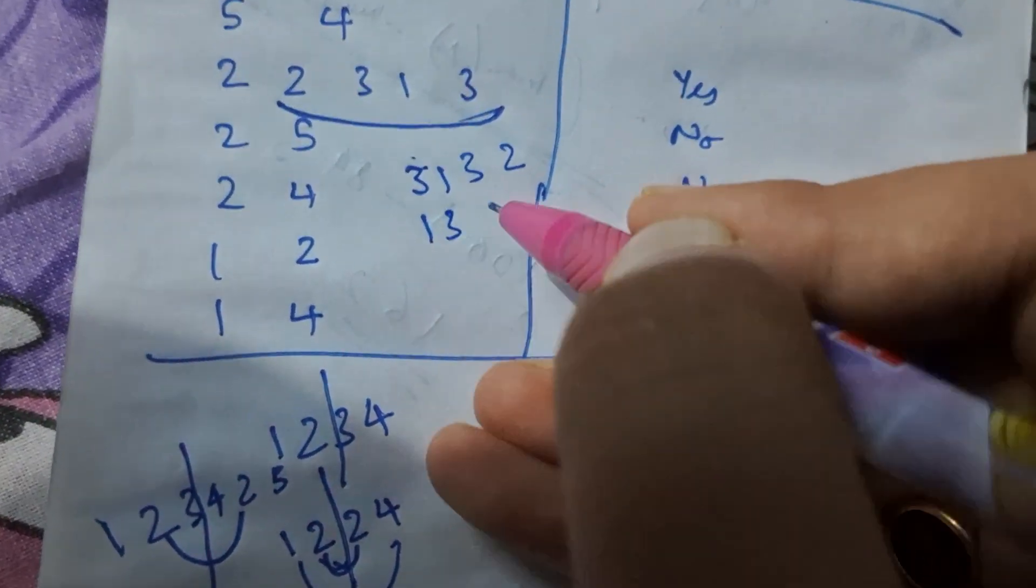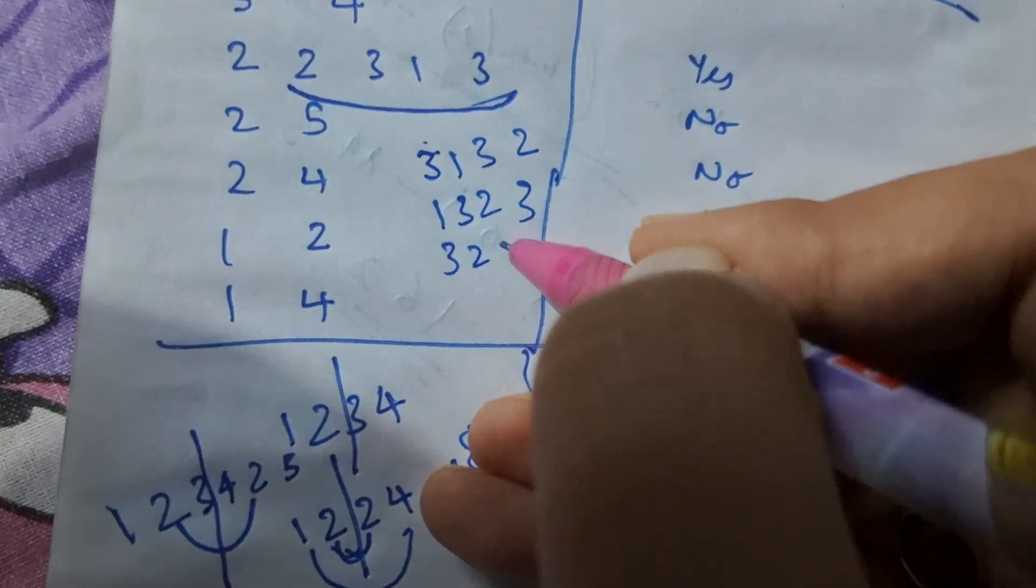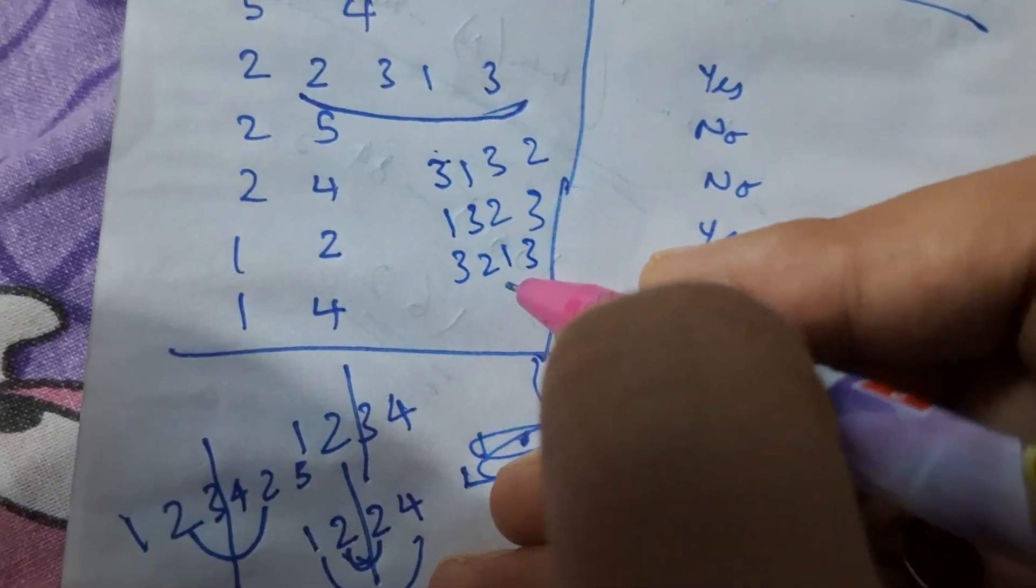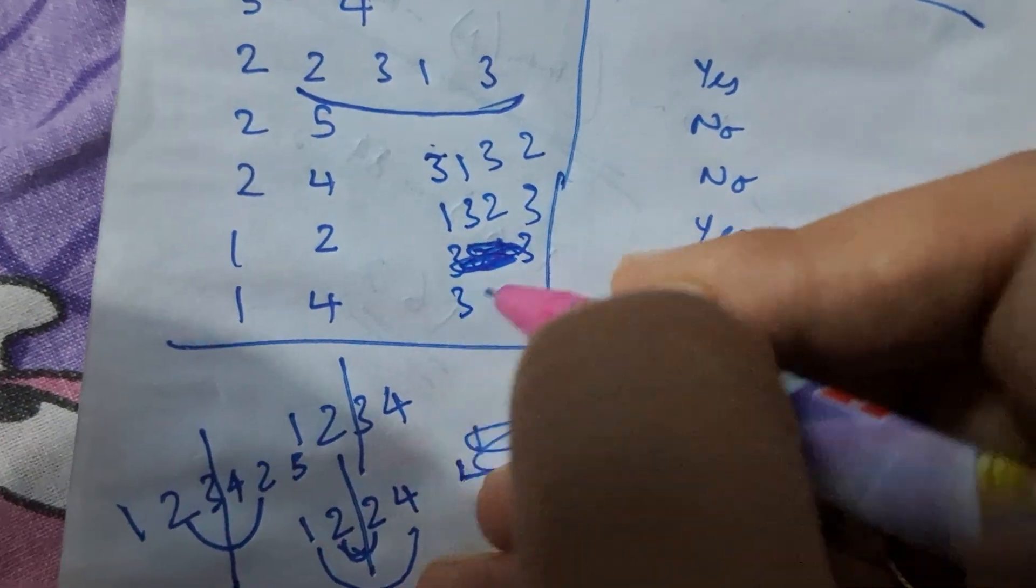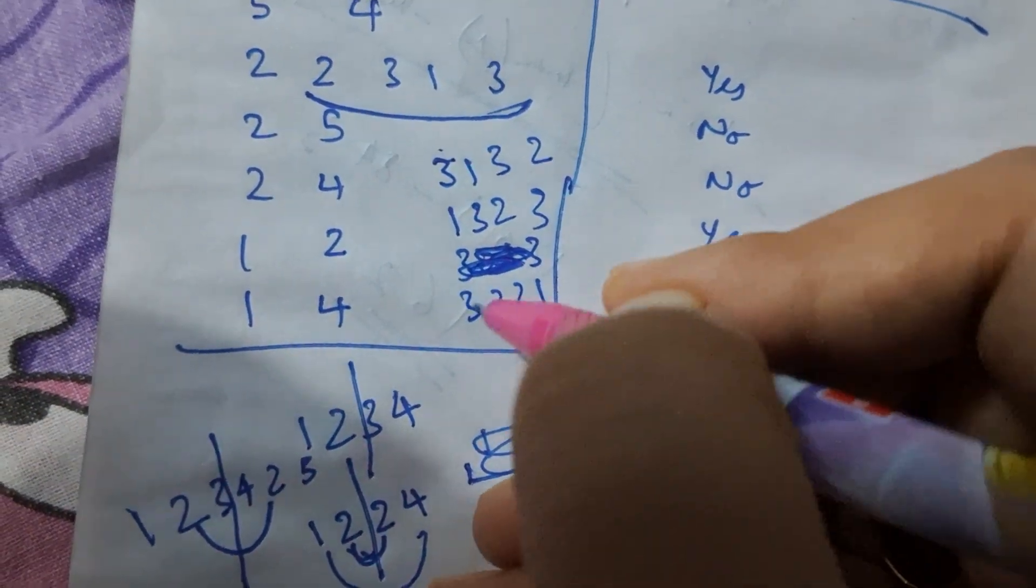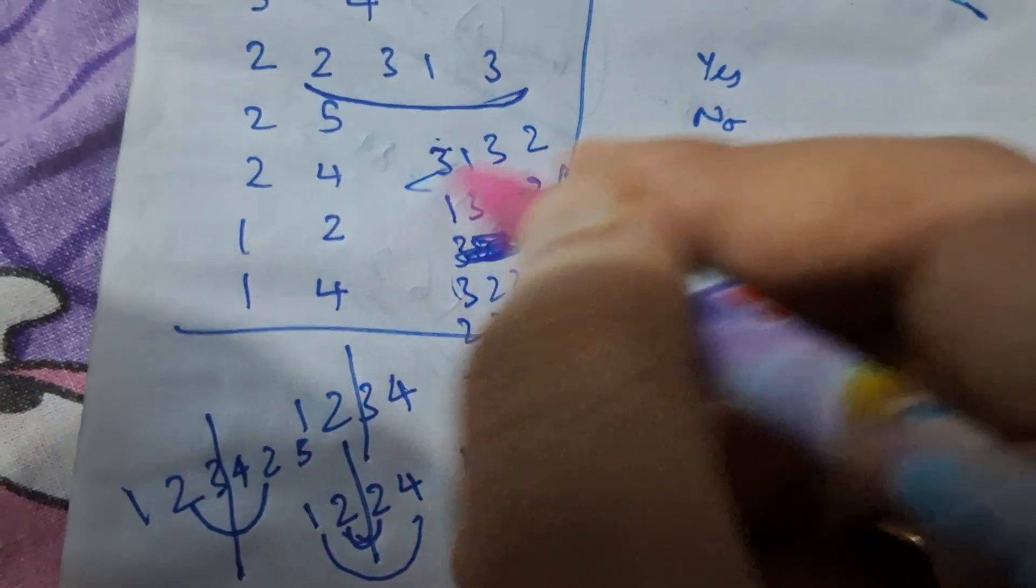Then 1,3,2,3 is also anti-palindromic. Then 3,2,1,3 is also anti-palindromic. Sorry, it's not 3,2,1,3, it's going to be 3,2,3,1, and again it becomes 2,3,1,3.